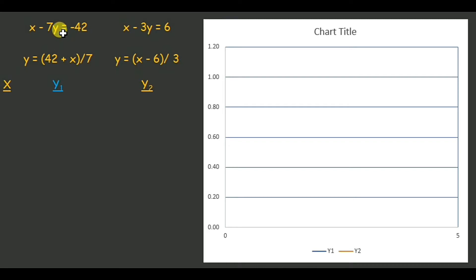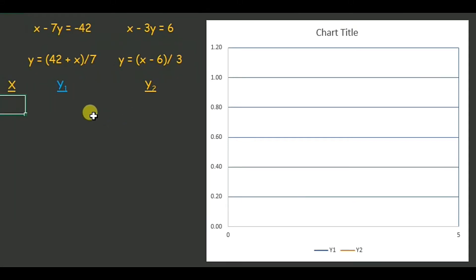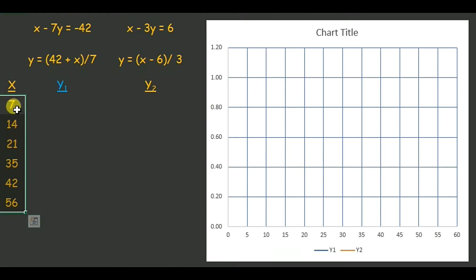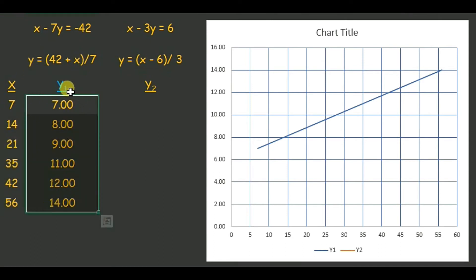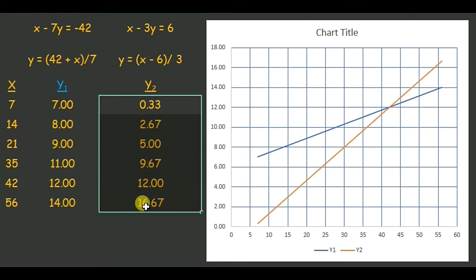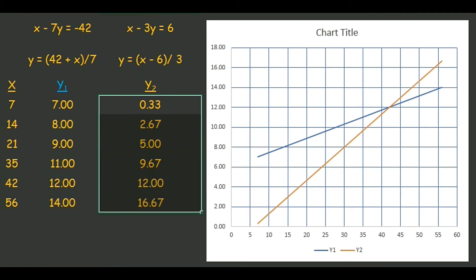Now let's plot these on a graph. We have the equations X minus 7Y equals negative 42 and X minus 3Y equals 6, which give Y₁ equals (42 plus X) over 7 and Y₂ equals (X minus 6) over 3. I'll take X values starting from 7 — we can't use 0 or negative values since age can't be zero or negative. Substituting these X values gives the Y₁ and Y₂ values. The blue line represents Y₁ and the orange line represents Y₂.